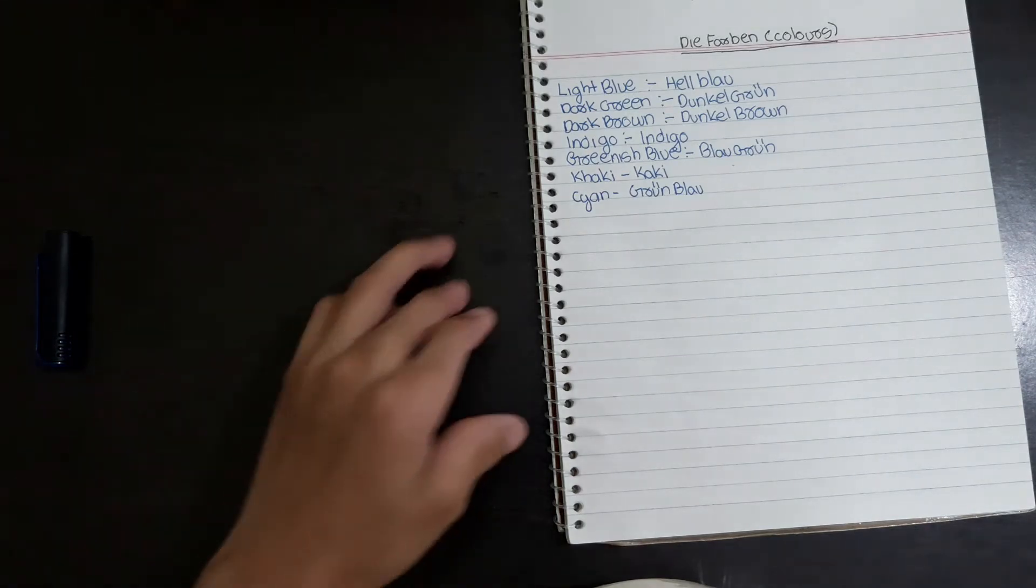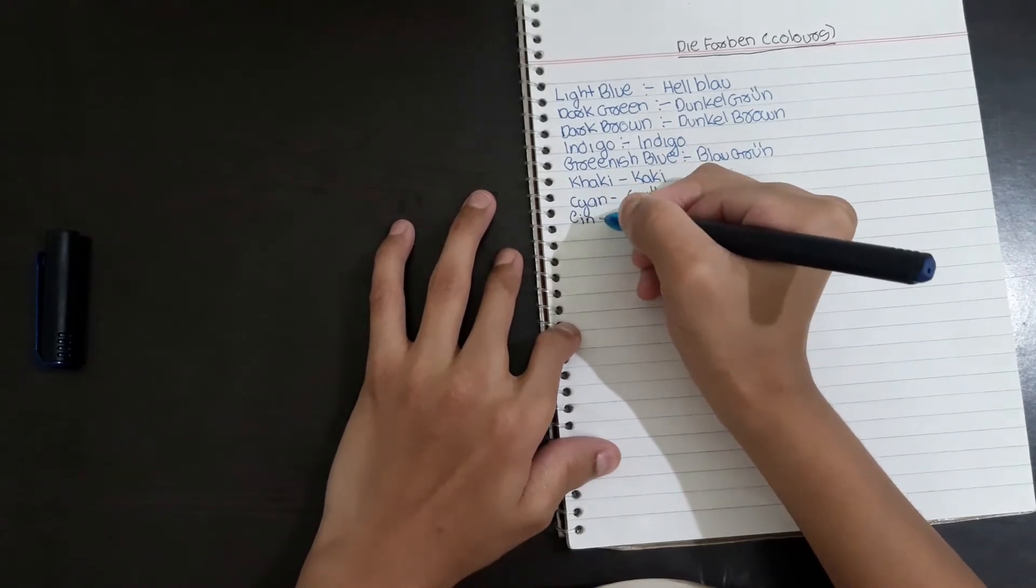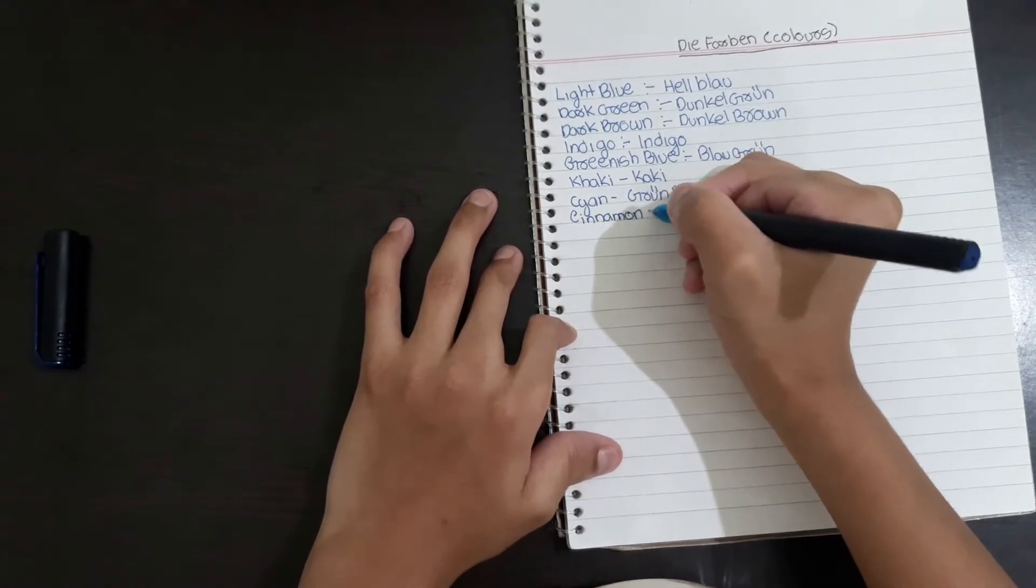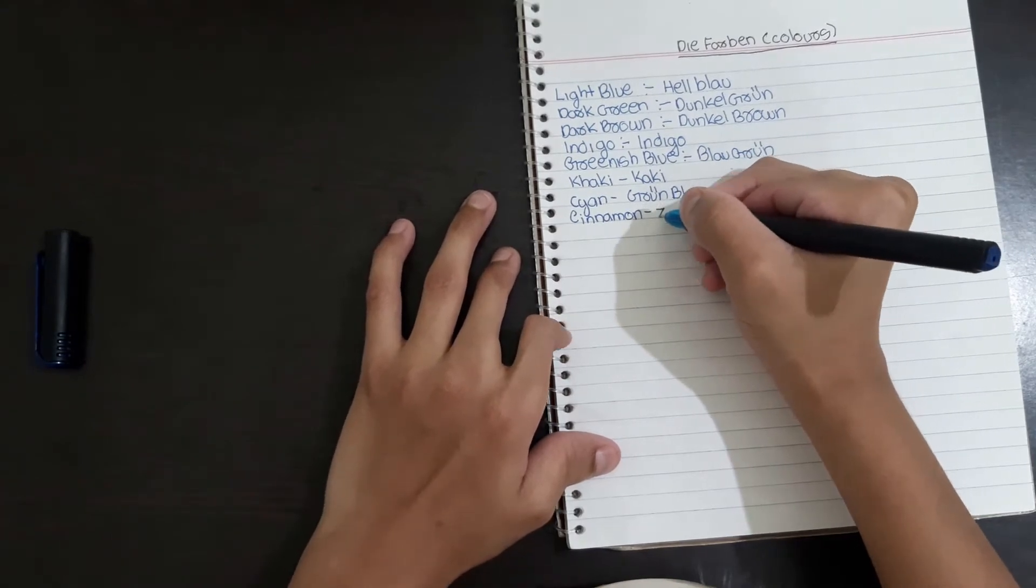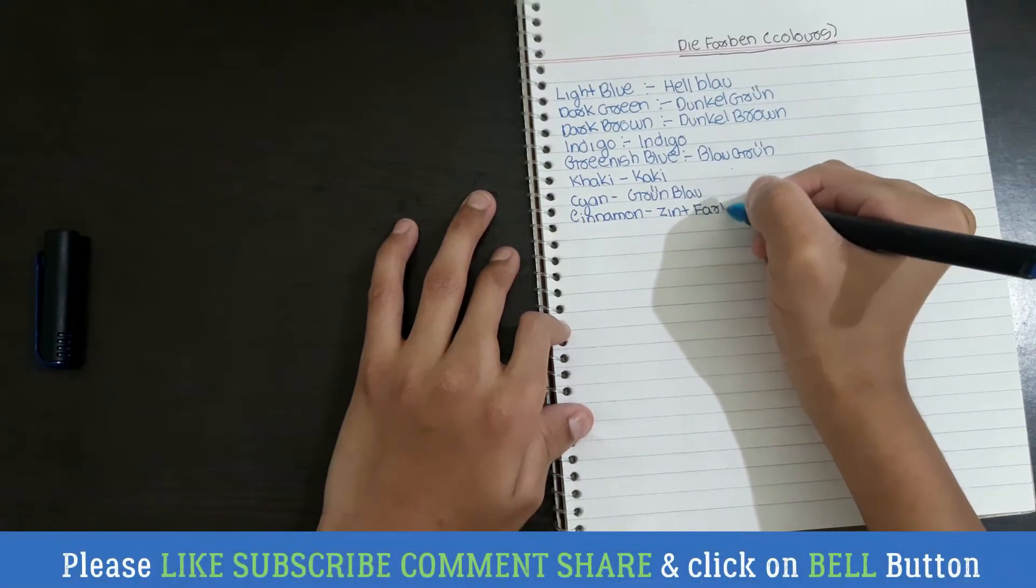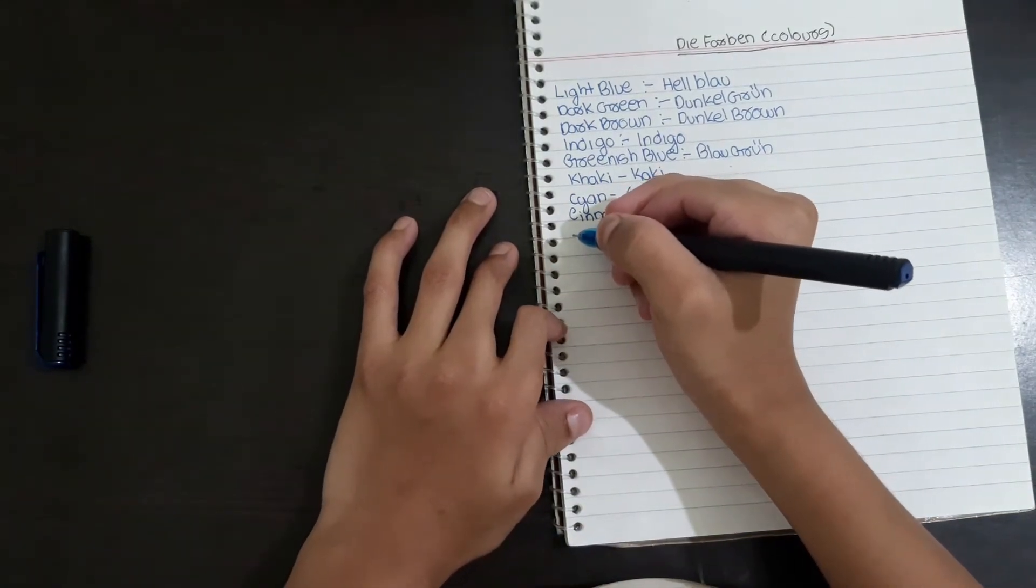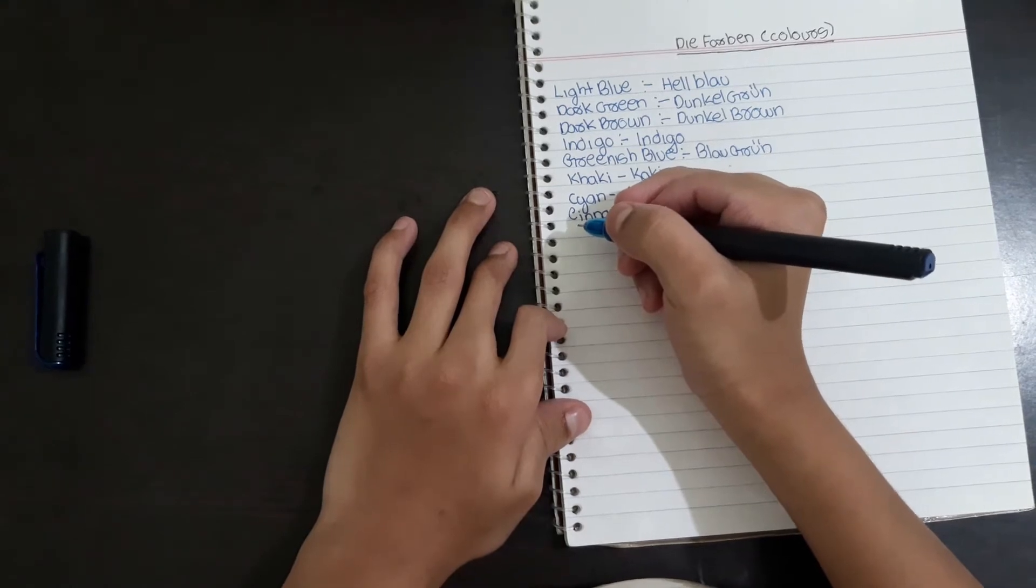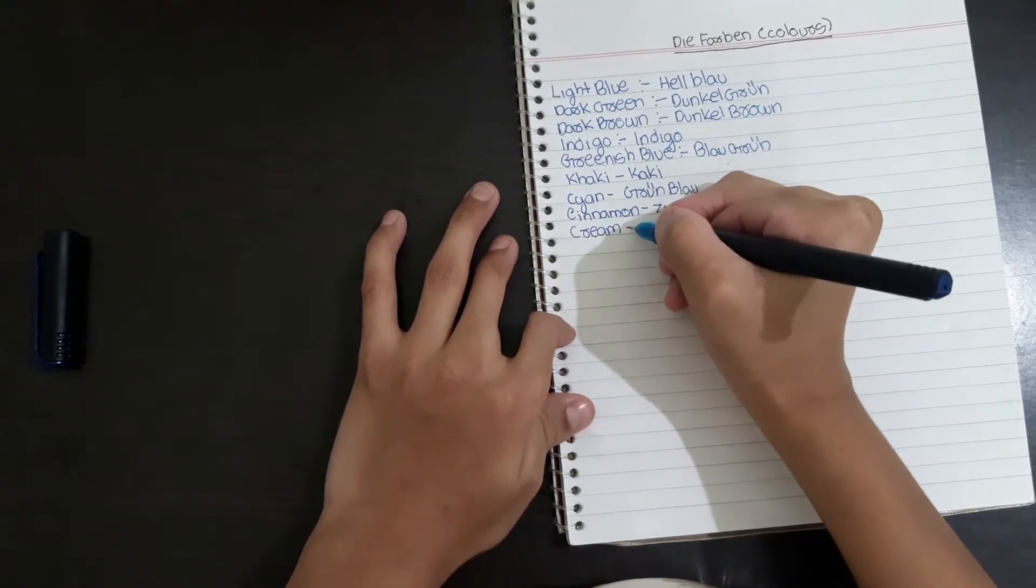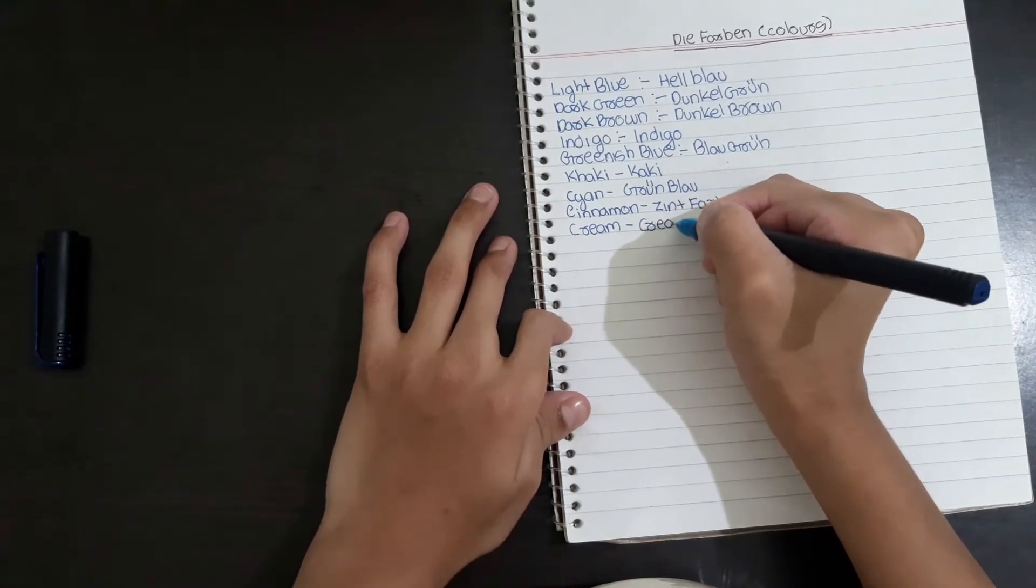Now Cinnamon. Cinnamon is Zimtfarbe. Now cream. This is also cream only but E is added to it.